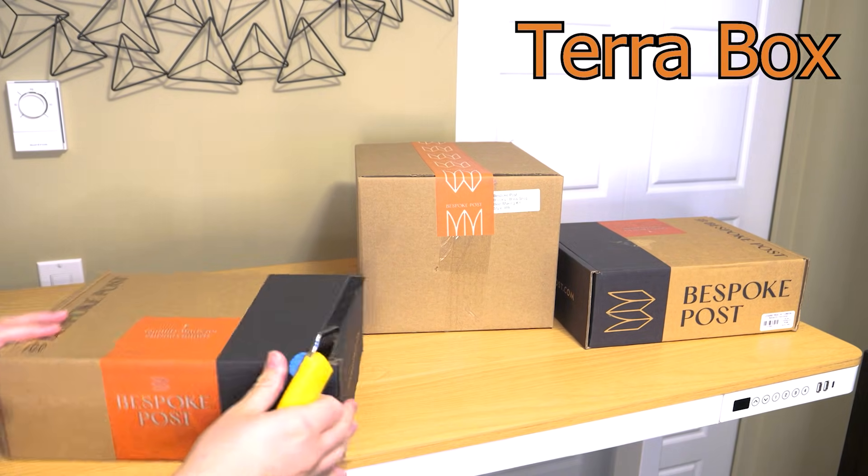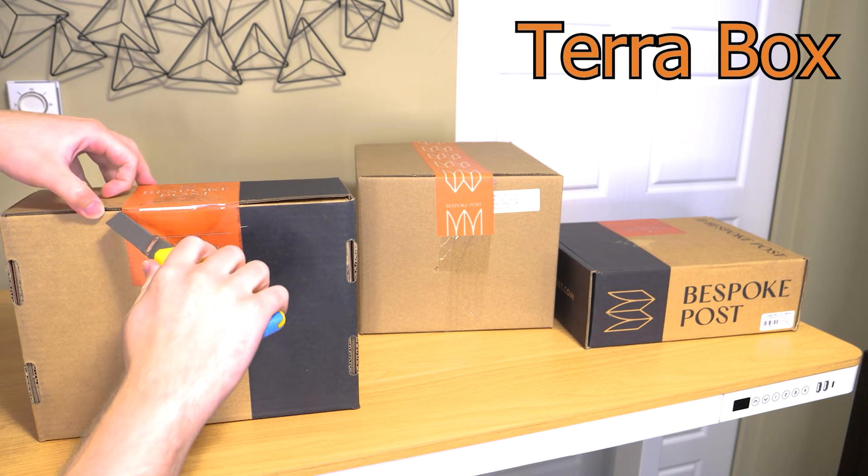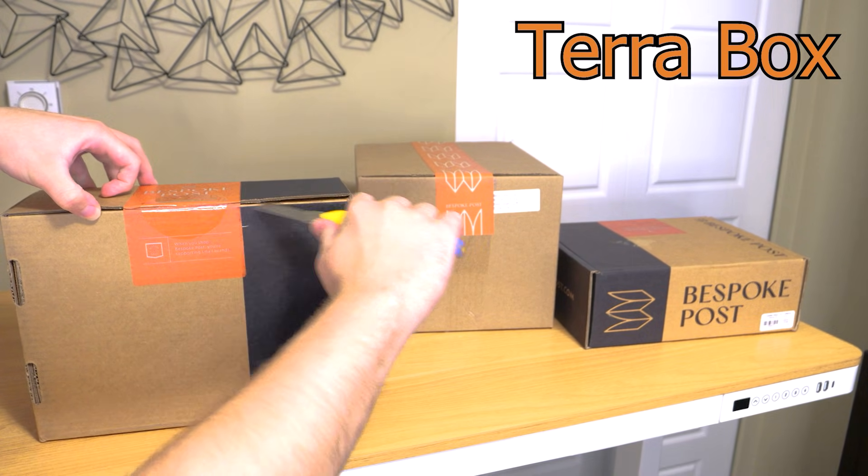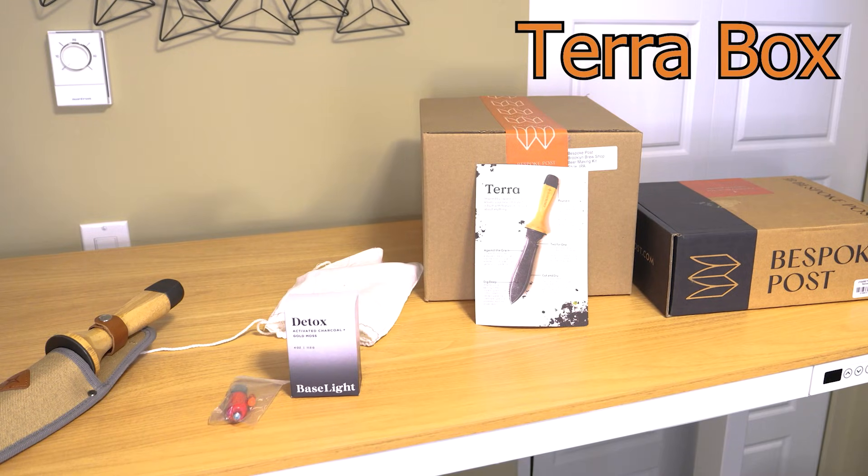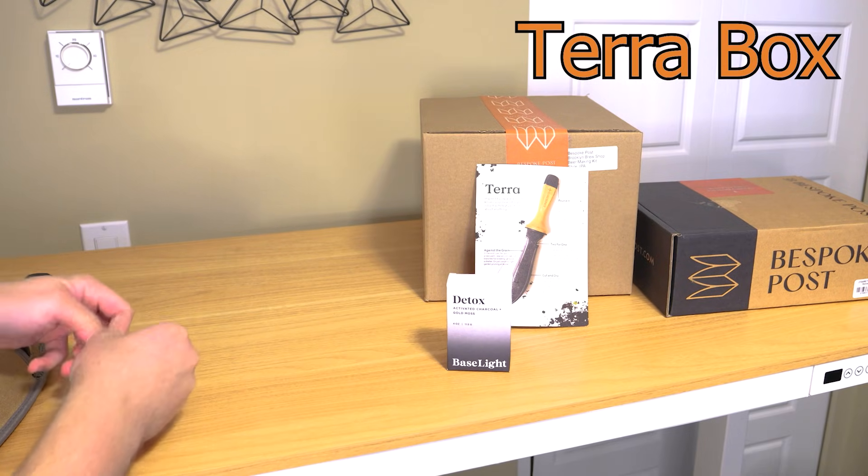Every month, Bespoke introduces its members to cool new products, outdoor gear, barware, home and kitchen goods, clothing, and more. Even live oysters, based on a preference quiz that you fill out. Every box of awesome has around $70 worth of goods inside, but costs you only a fraction of the value.